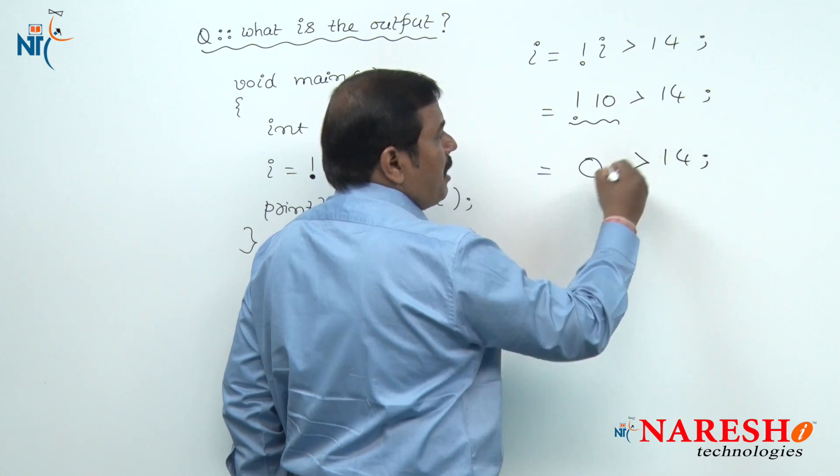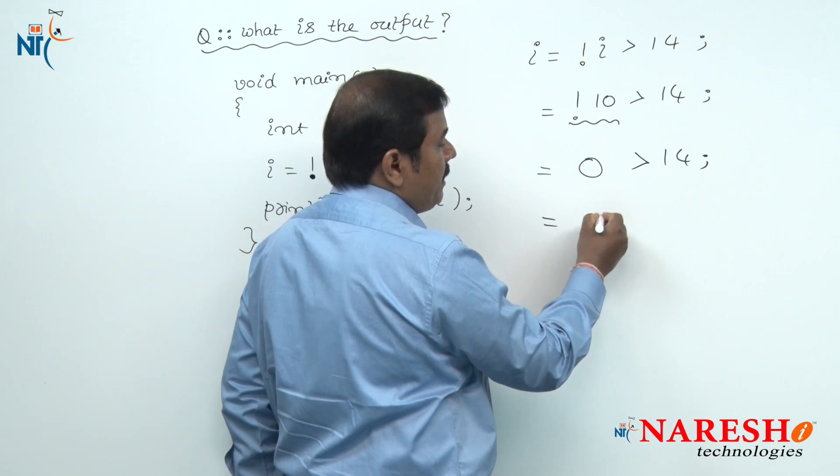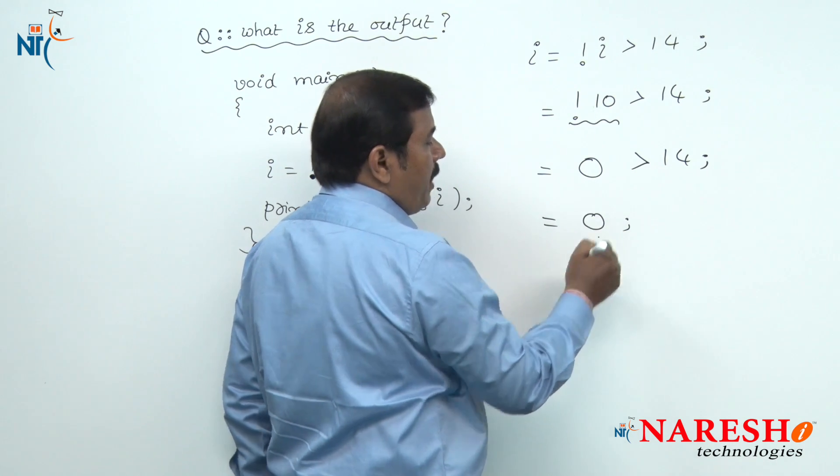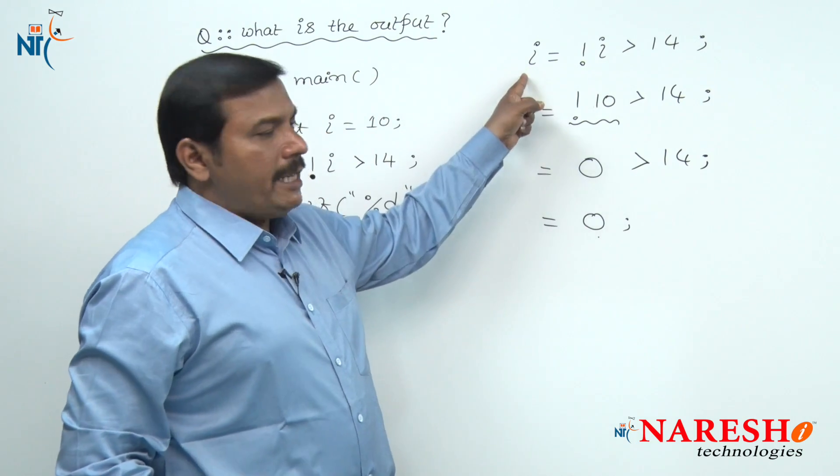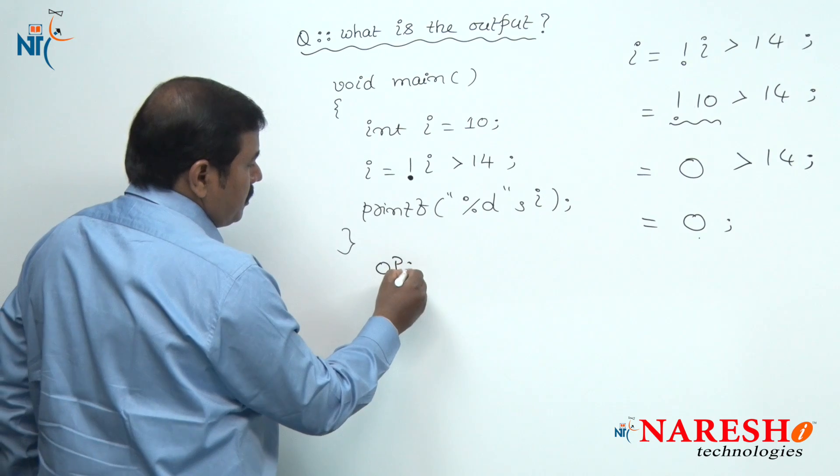And 0 is compared with 14. 0 is greater than 14 is evaluated as false. Hence, the value of 0 is assigned to the variable i. The final output of this code is 0.